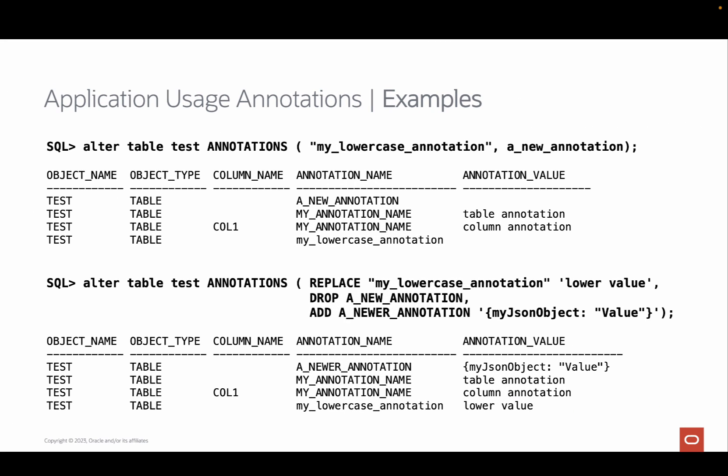Here are some more examples, especially on how to add multiple annotations, the use of double quotes, and how to update and delete annotations. In the first example, we add two more annotations to our table called 'test' using one alter command — two annotations without annotation values. The first annotation is enclosed in double quotes, preserving case sensitivity; the second does not have double quotes and is treated as case-insensitive. In the second example, a value is added to the lowercase annotation, an existing annotation entry is deleted, and a new annotation called 'a newer annotation' is added with a JSON value — all in a single alter table command.